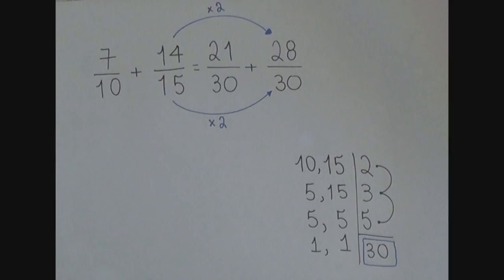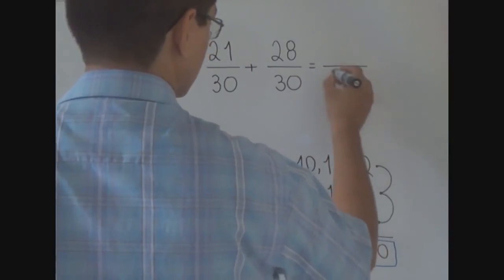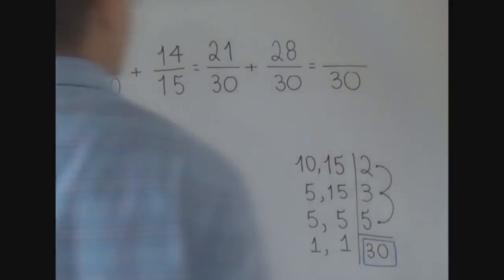What is the advantage of getting two new fractions equivalent to the old ones, but that have the same denominator? The advantage is that adding or subtracting fractions that have the same denominator is very easy. We just repeat the denominator, in this case it is 30.